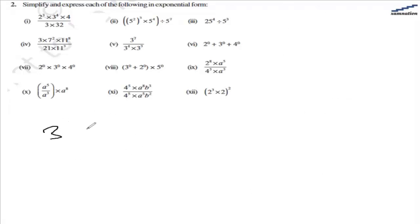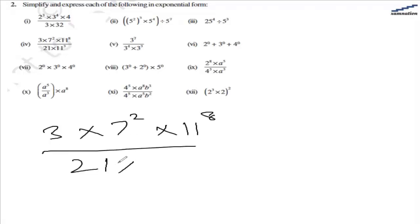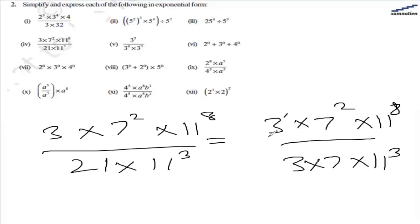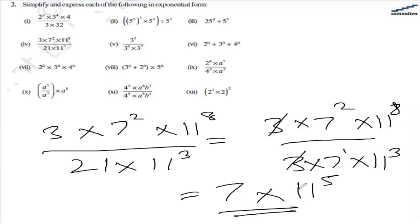In the fourth part, we are given 3 multiplied by 7 raised to the power of 2 and 11 raised to the power of 8 in the numerator, and 21 multiplied by 11 raised to the power of 3 in the denominator. Since 21 is a multiple of prime numbers 3 and 7, we split 21 into 3 multiplied by 7. So 3 cancels out. For 7, we have power of 2 in the numerator and power of 1 in the denominator, leaving one 7. For 11, we have 8 minus 3 which is 5. So the answer is 7 multiplied by 11 raised to the power of 5.